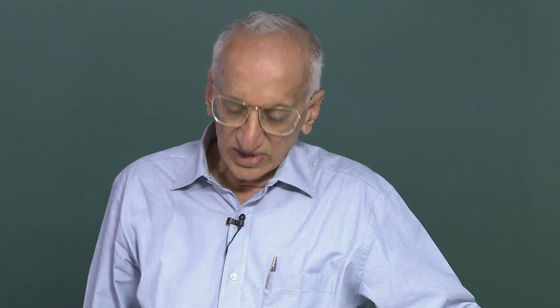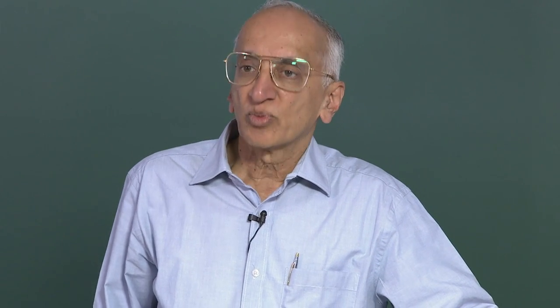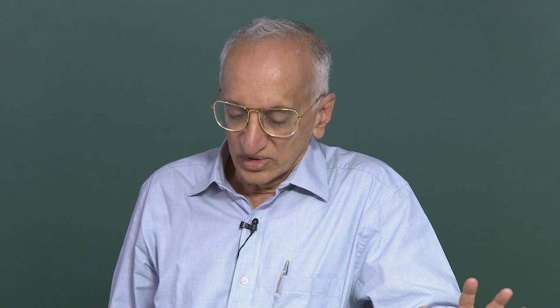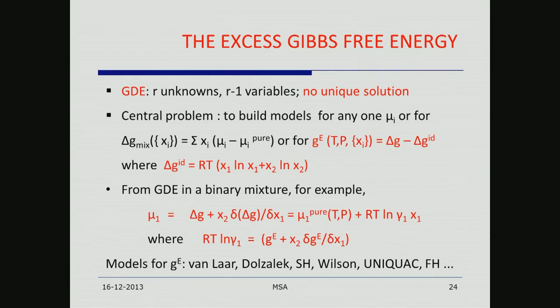All you have to do is guess what G_excess or ΔG of mixing is. There are various models; the only requirement is that the model gives results agreeing with experiment for a large number of systems — otherwise it is forgotten. The Van Laar and Dolza-like models are classical thermodynamic models; the others are molecular models. You have various models like the Wilson, the UNIQUAC, the Scatchard-Hildebrand, the Flory-Higgins model, and so on.